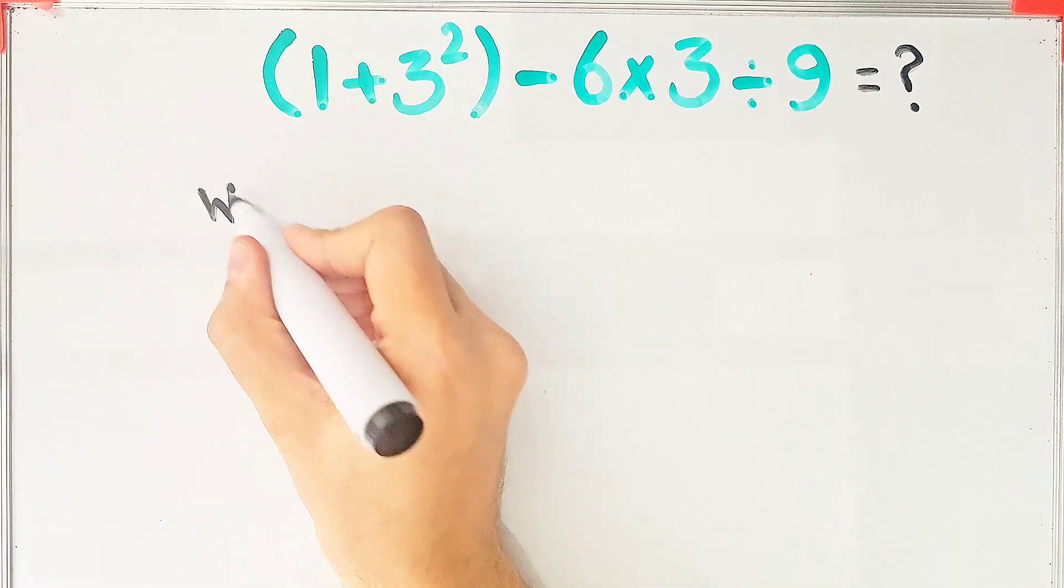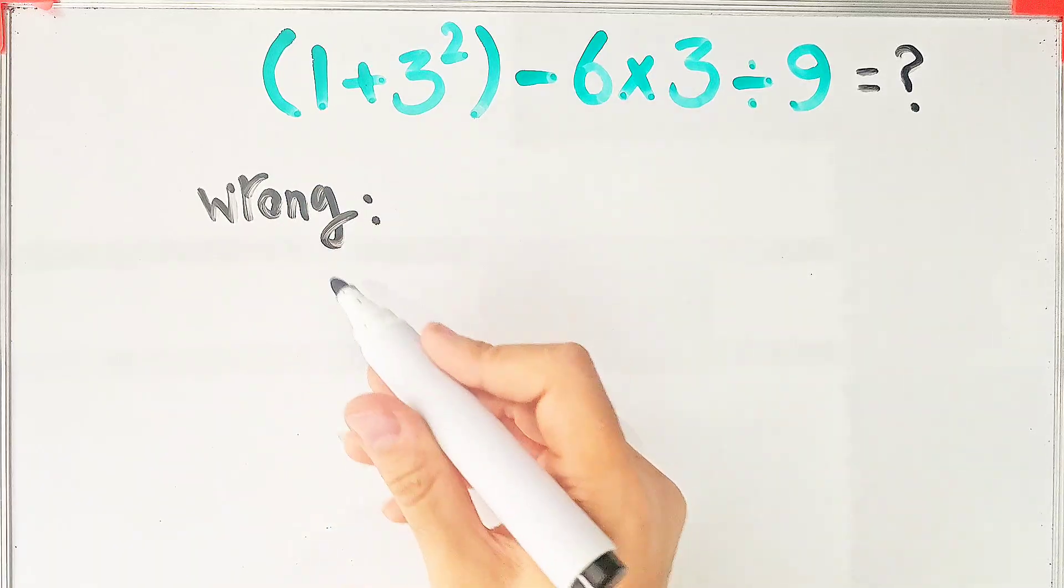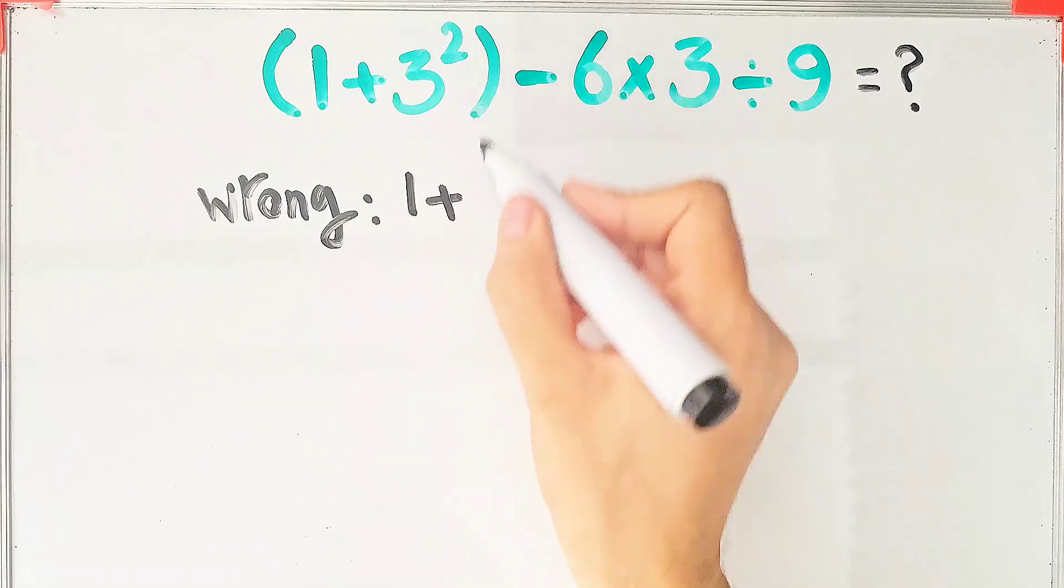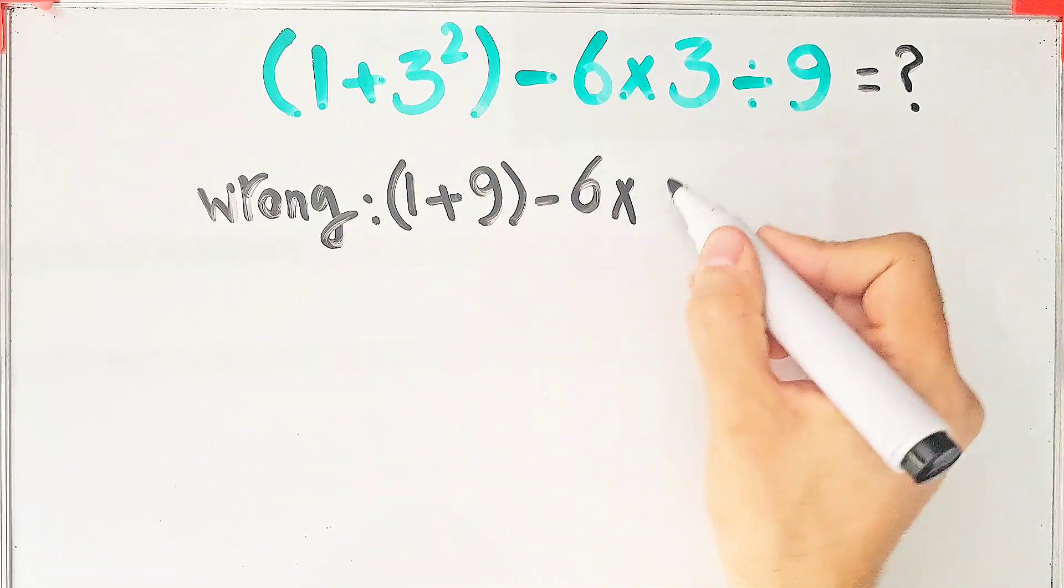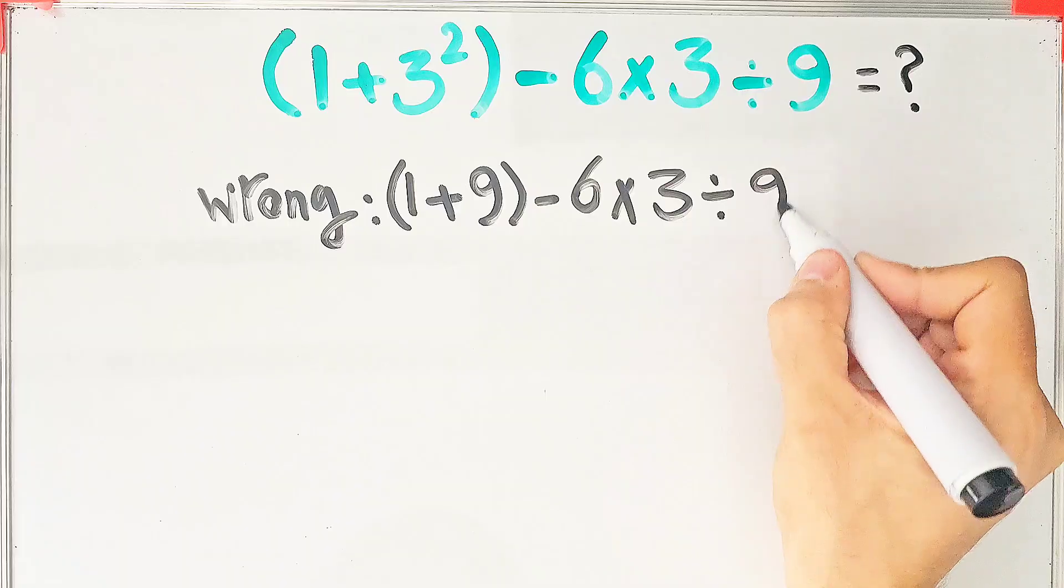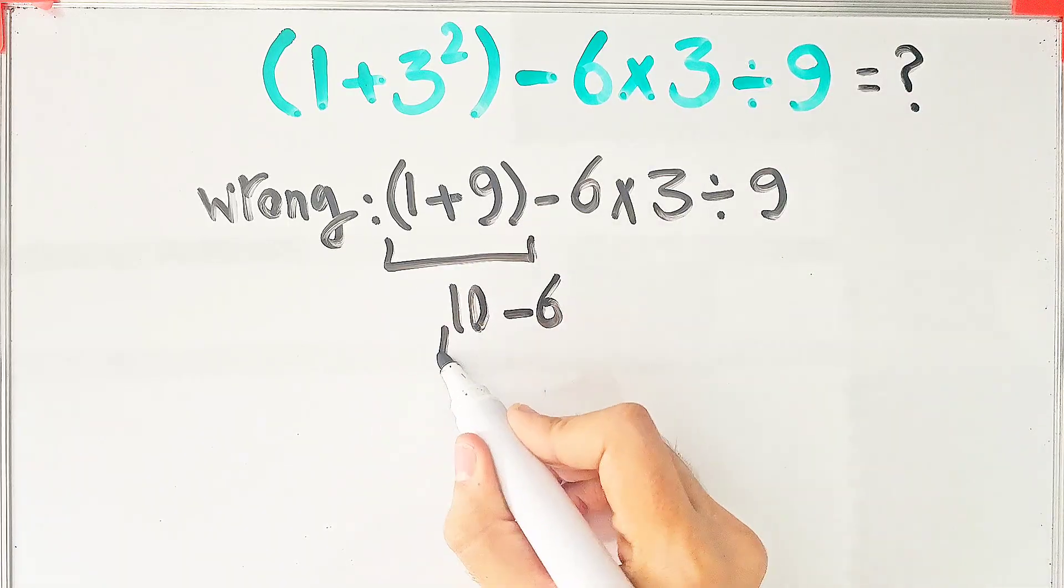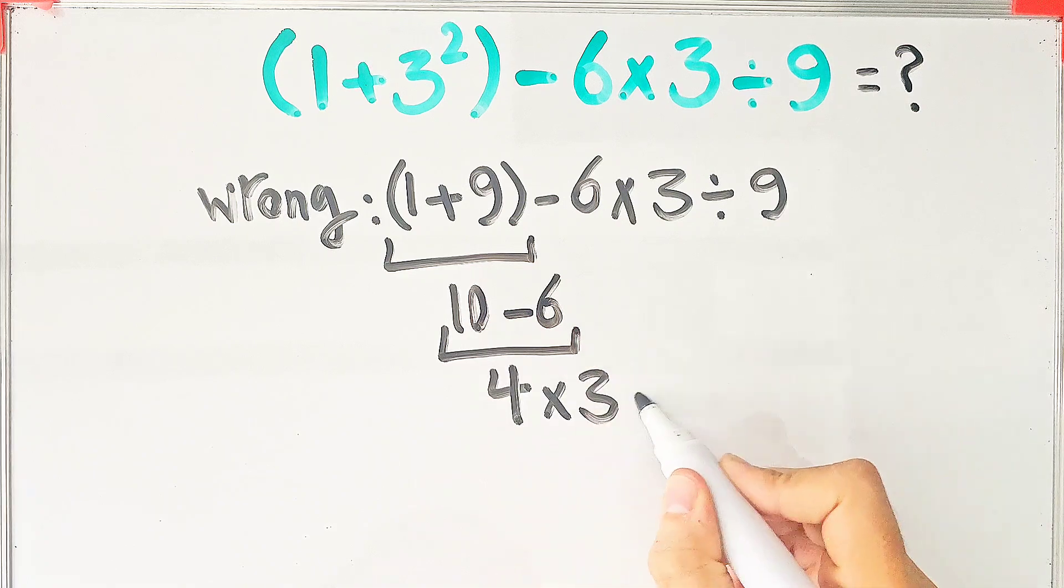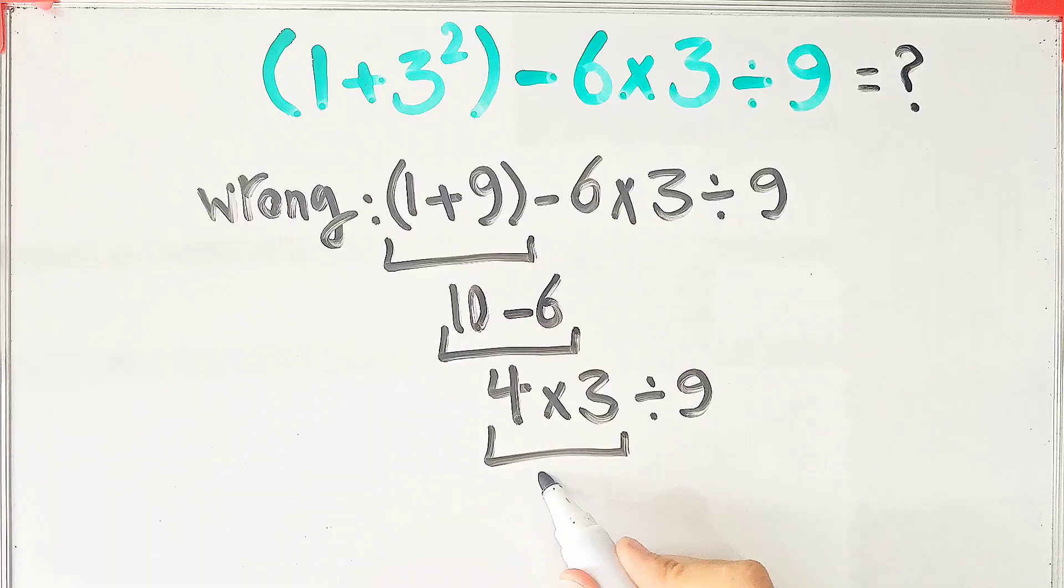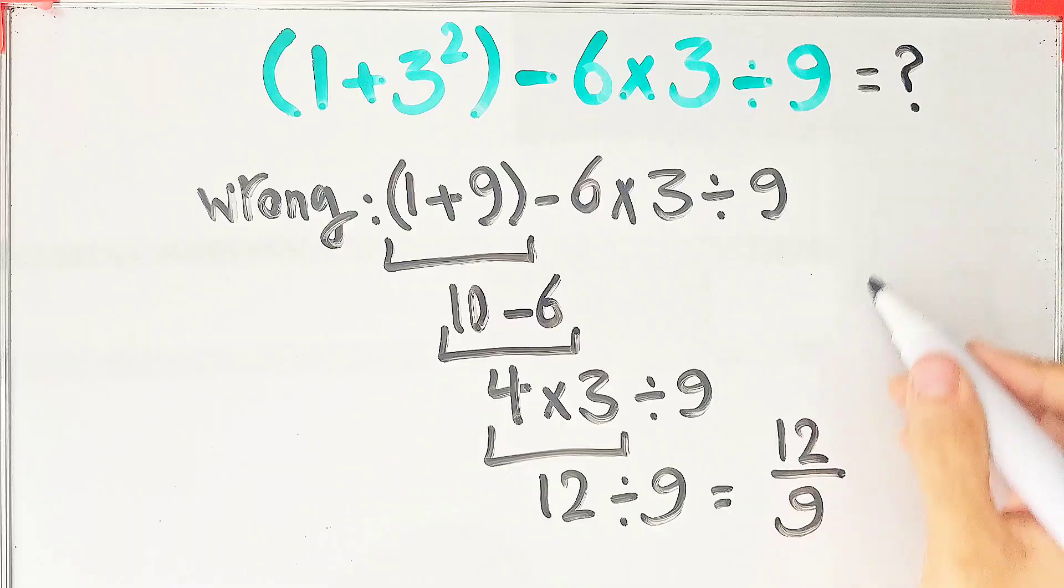In the wrong way of solving this question, some people solve it like this: 1 plus 3 to the power of 2 inside the parentheses, then minus 6 times 3 divided by 9. 1 plus 9 equals 10. 10 minus 6 equals 4, and after that, 4 times 3 divided by 9. 4 times 3 equals 12, and 12 divided by 9 equals 12 over 9. But this answer is definitely wrong.